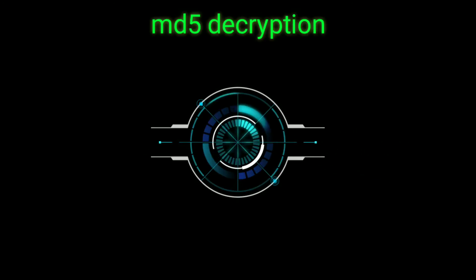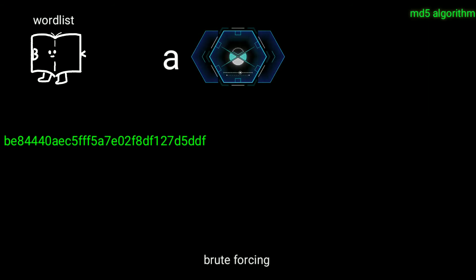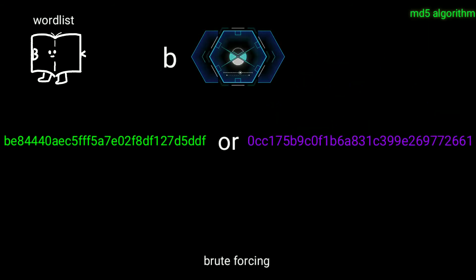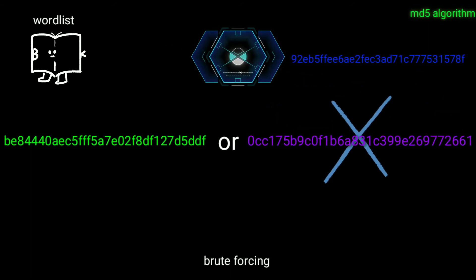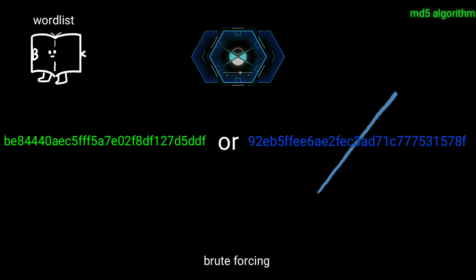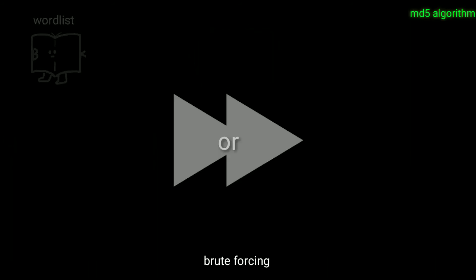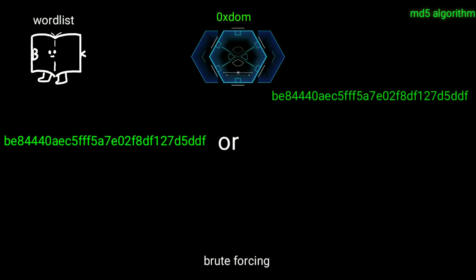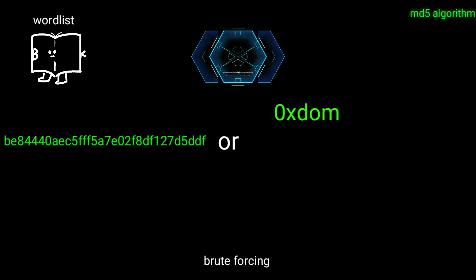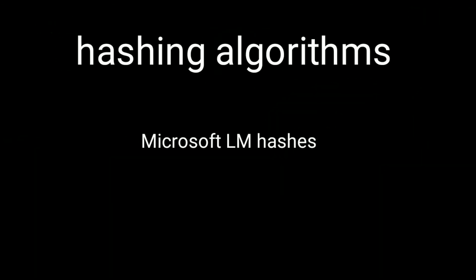Now that we know what a hash is, let's look at how hashes are actually cracked. If we take our MD5 example and zoom into it, the cracker is repeatedly trying to process words from a dictionary, converting each into a hash, and then comparing it with the original hash — which is essentially a brute force / dictionary attack.